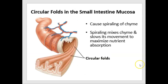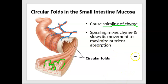Looking at the circular folds: if you cut open the small intestine, you would see obvious ridges — folds of the mucosal lining. These cause spiraling of the chyme, and that's important because it slows the movement of chyme through the intestine. That maximizes nutrient absorption and also refreshes which portion of the chyme is in contact with the brush border enzymes, enhancing chemical digestion.